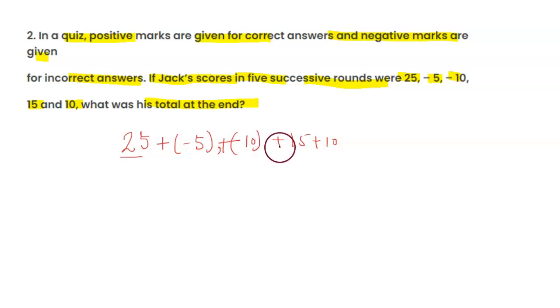So, 25 plus 15 equals 40, then 40 plus 10 is 50.